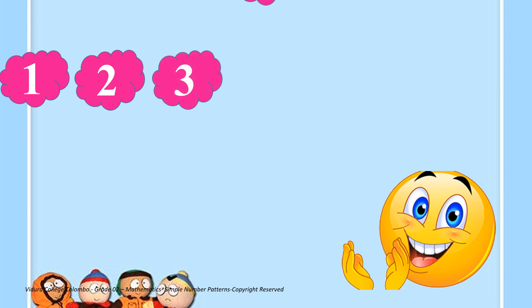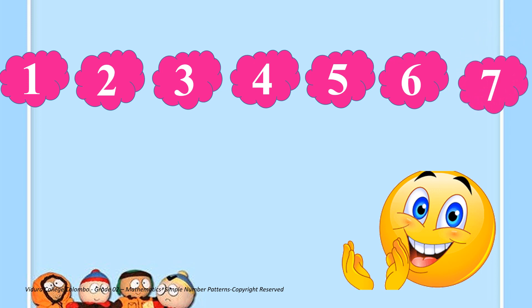Okay children, now identify the number pattern and complete them. Shall we do it together? The first three numbers are given for you, which are 1, 2, 3. Okay, let's see which number comes next. Next 4, next 5, next 6, next 7. In this pattern, the gap in between two numbers is 1.